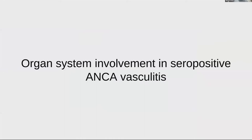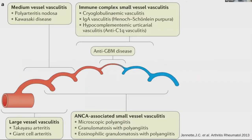Let's talk briefly about organ system involvement in ANCA-positive vasculitis. When we think about ANCA vasculitis, we often think of them as small vessel vasculitis, but there's quite a big range in terms of vessels that can be involved, all from the arteriolar level to the venular level. Capillary level involvement is often associated with anti-GBM disease.